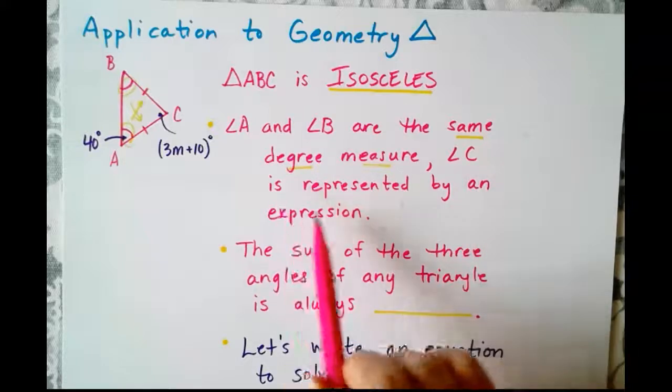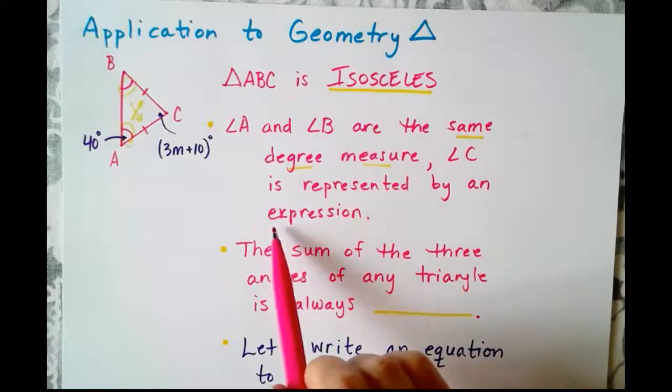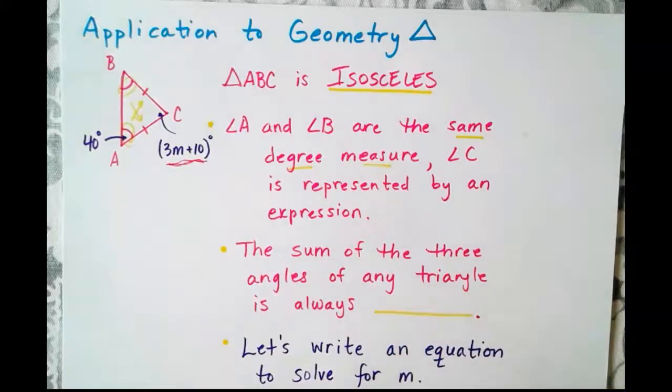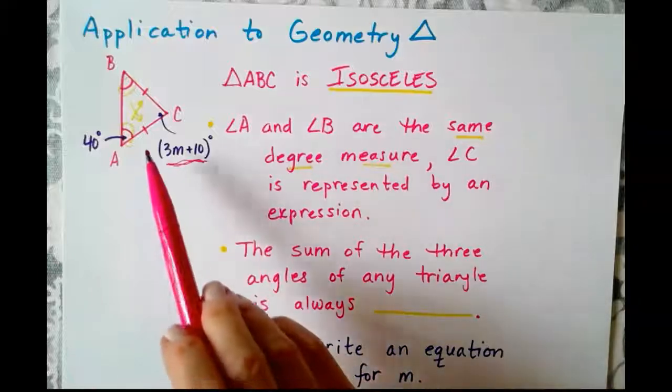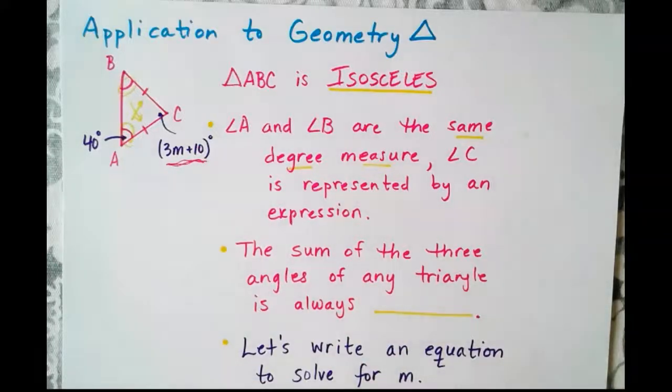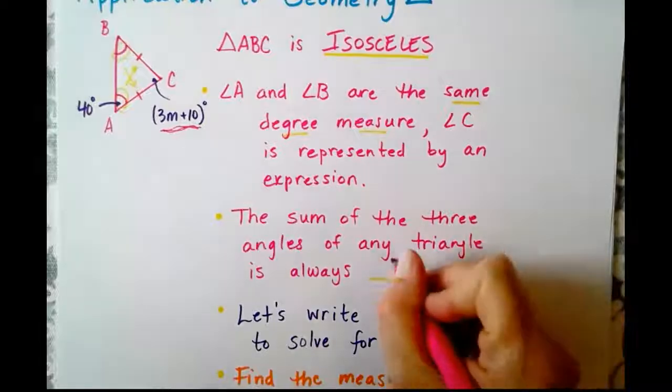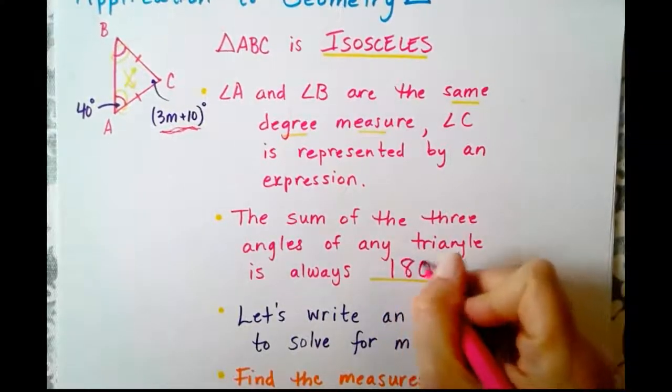So we're dealing with an isosceles triangle. So A and B are the same measure. Angle C is represented by an expression. So here's angle C right here. Angle C is 3m plus 10 degrees. Not 10 degrees, but the quantity 3m plus 10. So the sum of the three angles of any triangle is always what? Well, you learned in pre-algebra that a triangle has three angles and those angles always have a sum of 180 degrees.